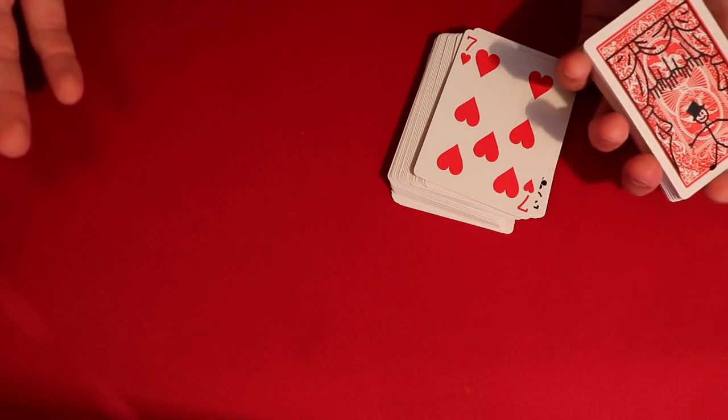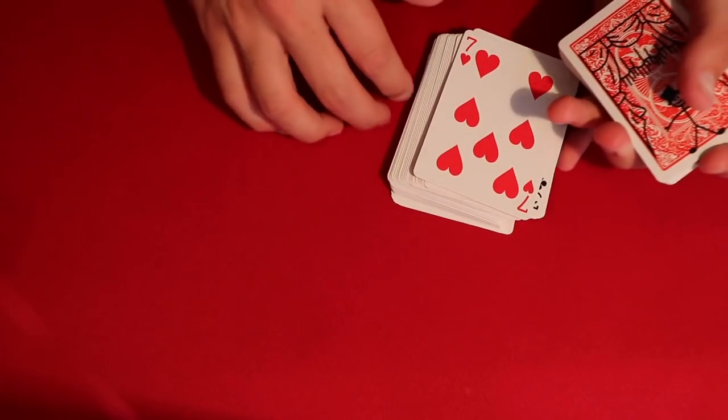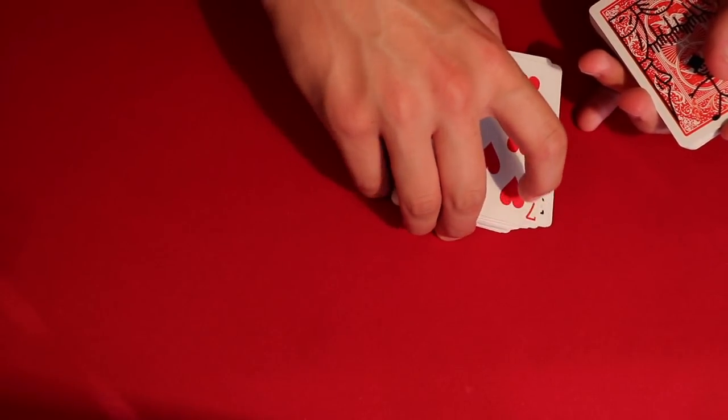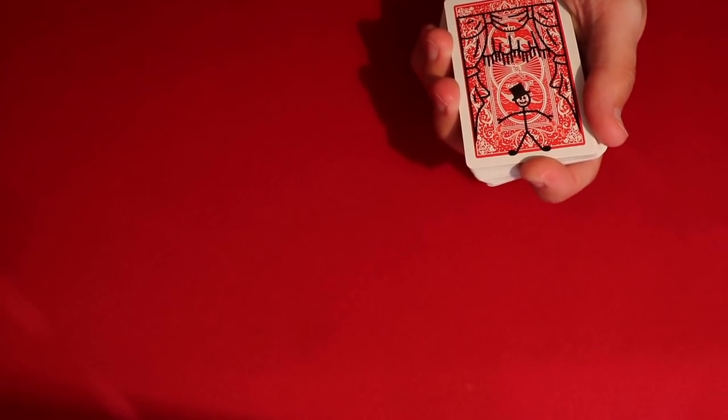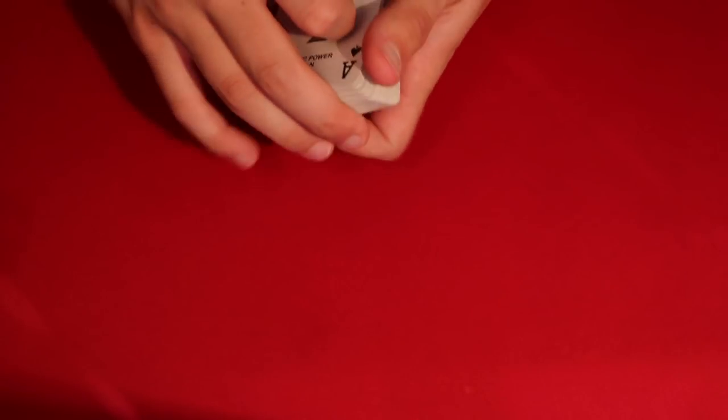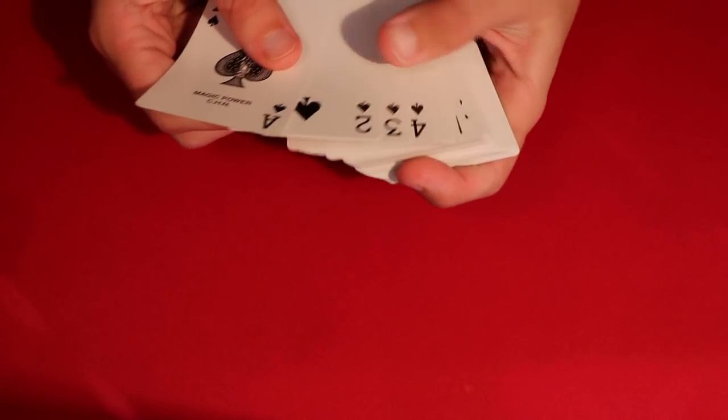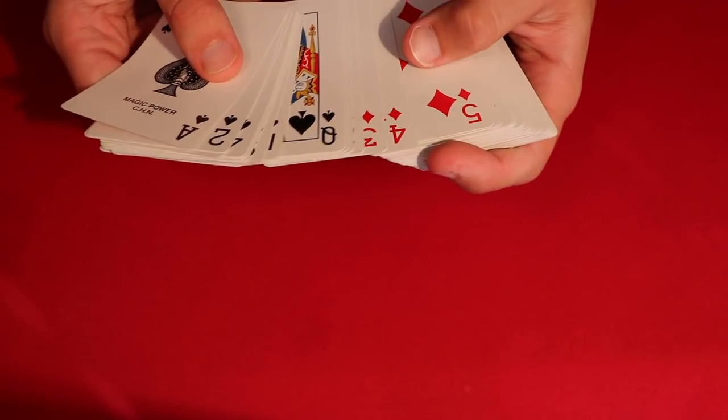So at this point, let's say the spectator is gonna pick any card. The only reason I use the deck is because I just want to let you guys know that I was using a random card. So at this point, let's say the spectator said any card. Let's say they were to say maybe like the seven of hearts, right? So what you would do if they were to say the seven of hearts would go through the cards. See, it's super simple guys.